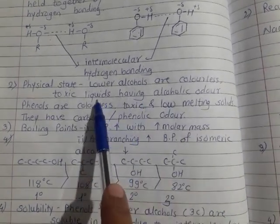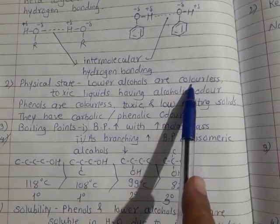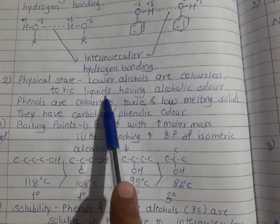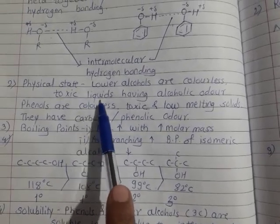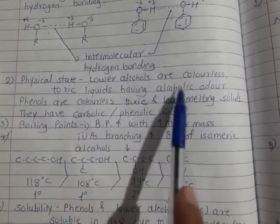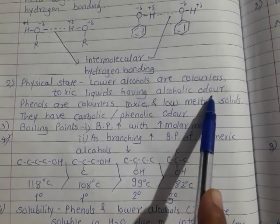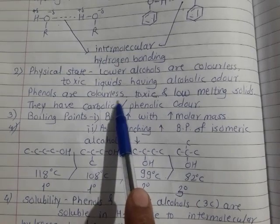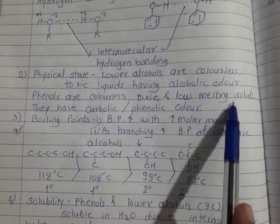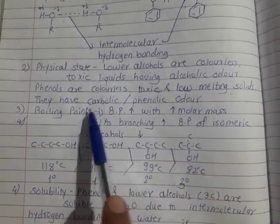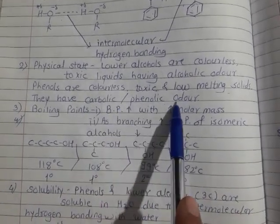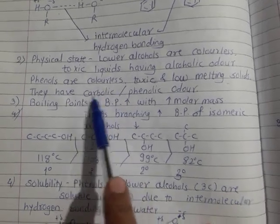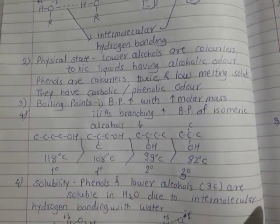The second property is physical state. Lower alcohols are colorless — they have no color. They are toxic liquids with a characteristic alcoholic odor. Phenols are also colorless and toxic. They are low-melting solids and have a carbolic or phenolic odor. Phenol is also known as carbolic acid.